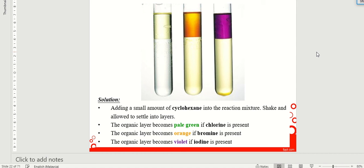So, they actually dissolve better in cyclohexane compared to water. So, when you shake cyclohexane together with water, what will happen is the molecules, the Cl2, Br2, and I2 molecules, from the water, from the aqueous solution is extracted into the cyclohexane.